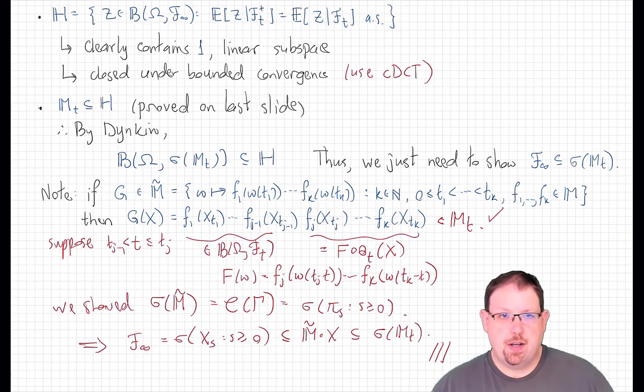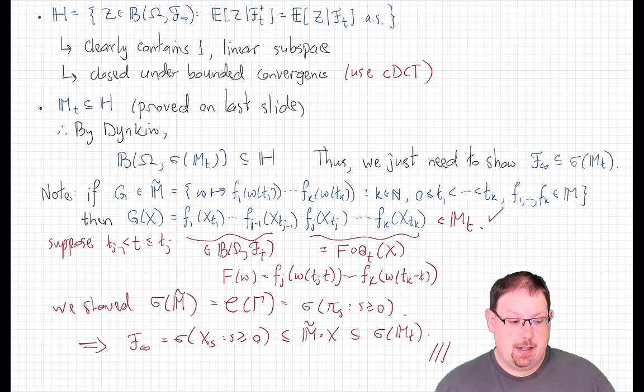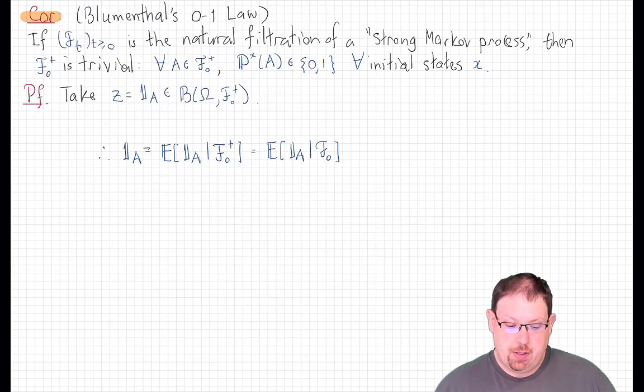So what does this funny result tell us? It says that in wide generality, conditioning on F_{t+} is the same as conditioning on F_t, which says that F_t and F_{t+} are more or less the same. They can only differ by null sets. Now, that might seem like a boring statement, but it actually has some profound and surprising consequences. And here is the main one, Blumenthal's 0-1 law,